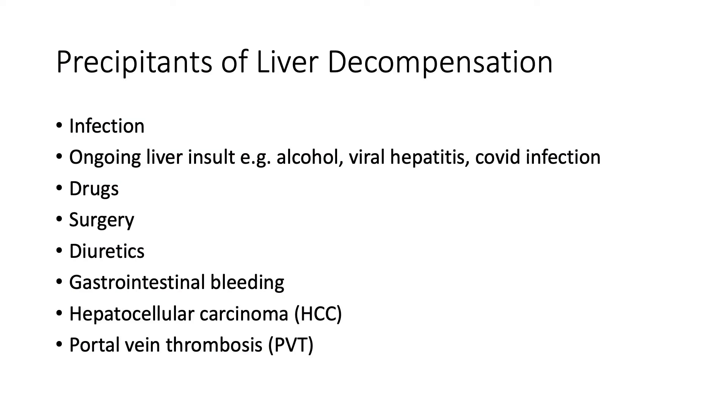Sometimes medications and other iatrogenic insults such as post-surgical can lead to a decompensation event. It's important to be mindful that the cirrhotic liver, in particular the decompensating liver, has differential metabolism of drugs. For patients with ascites, diuretics can prompt a kidney injury and electrolyte imbalance, which can then lead to decompensation. GI bleeding can also prompt further decompensation, and it's important to remember structural causes such as hepatocellular carcinoma or portal vein thrombosis.